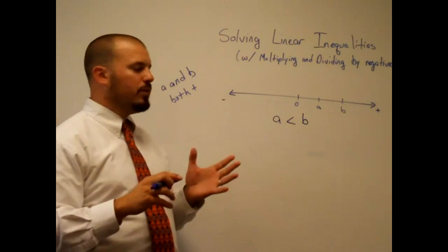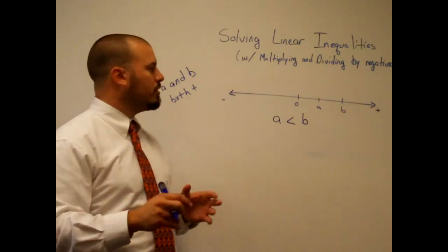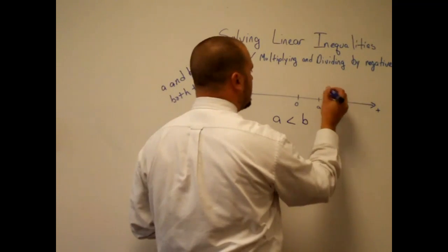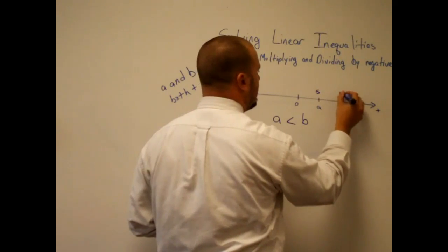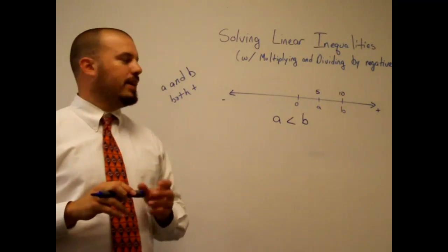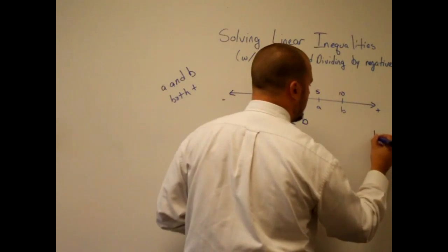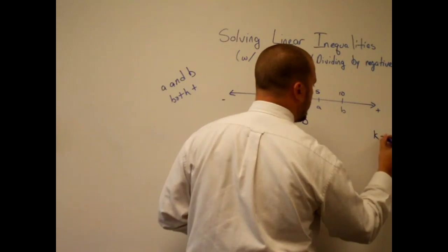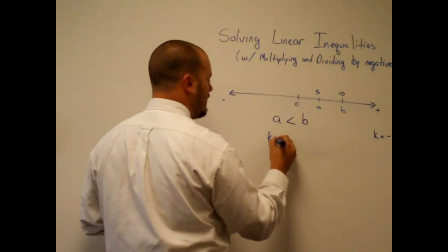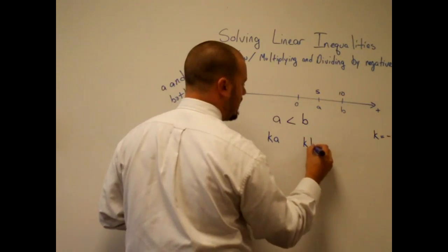For a specific example, let's say A is 5 and B is 10. The negative number we're going to multiply by — let's call it K — will be negative 1. So we're going to look at what K times A is and compare that to K times B.